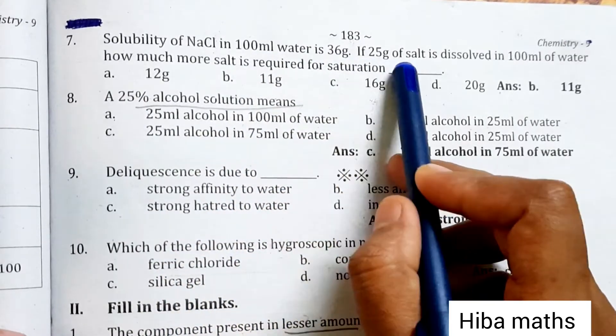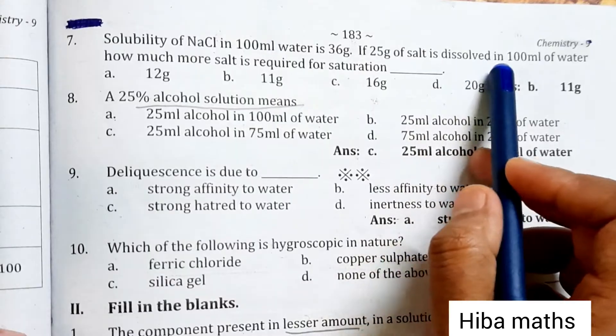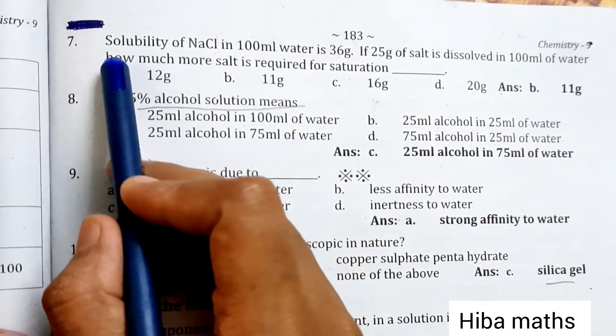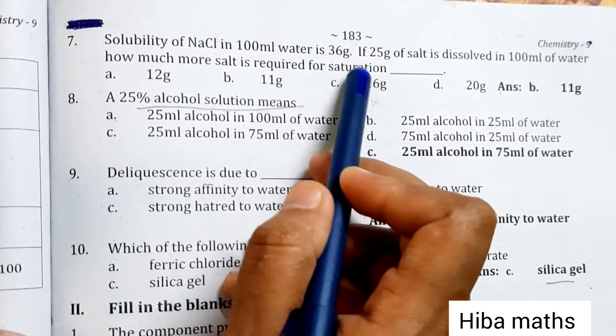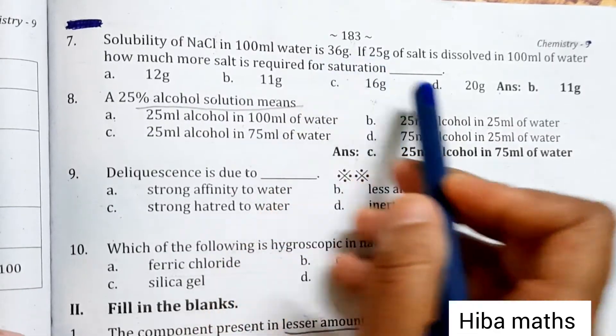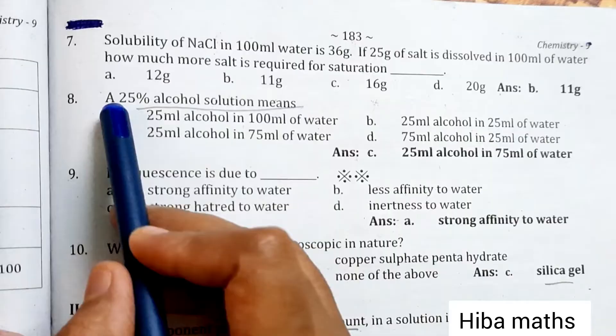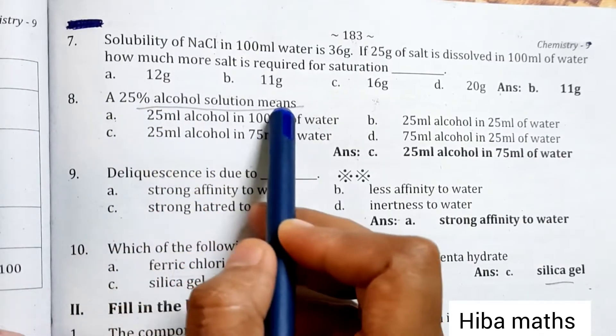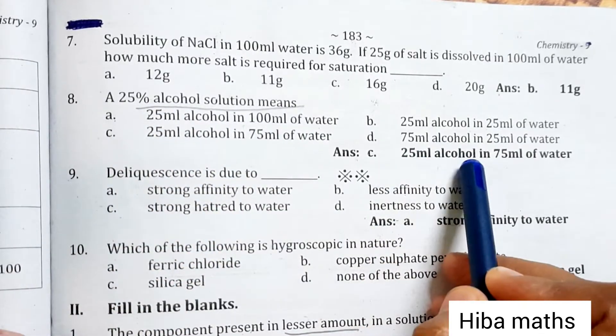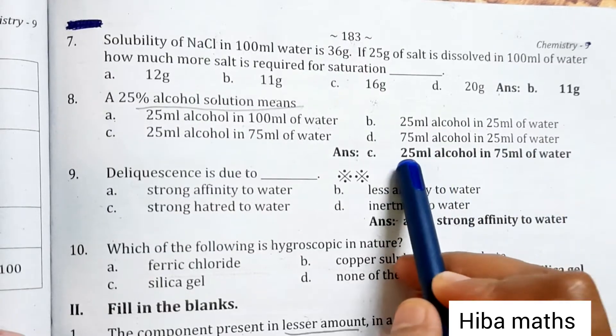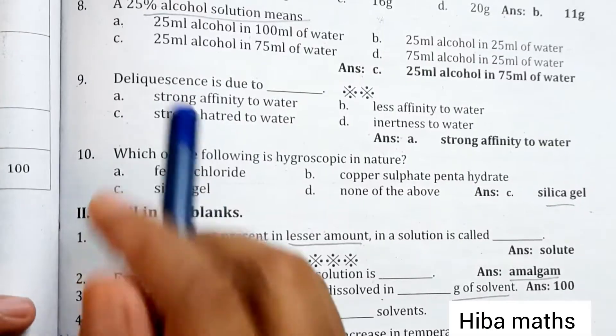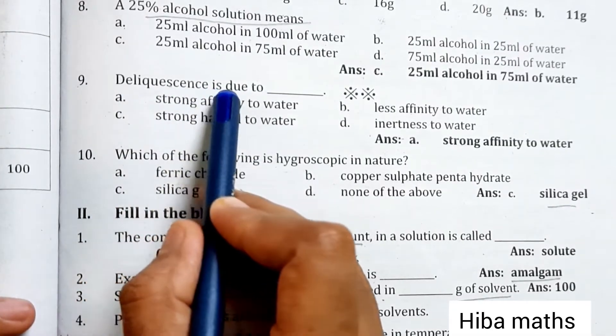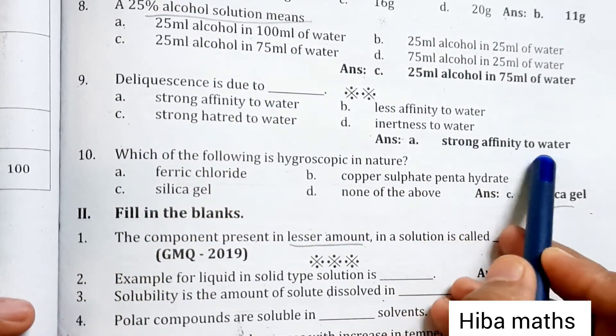If 25 grams of salt is dissolved in 100 ml of water, how much more salt is required for saturation? 25% alcohol solution means 25 ml alcohol in 75 ml water (100 minus 25 equals 75). Deliquescence is due to strong affinity to water.